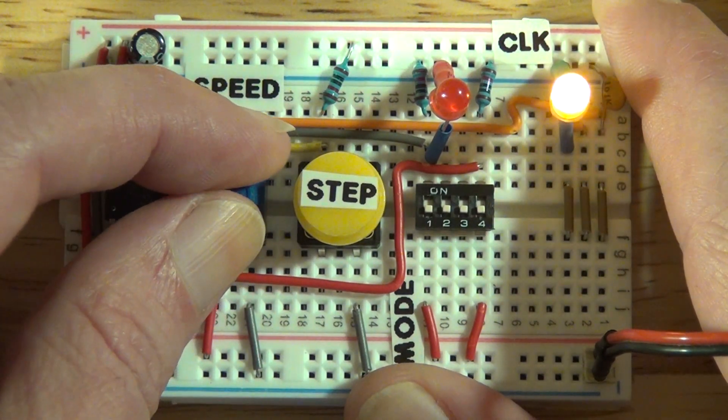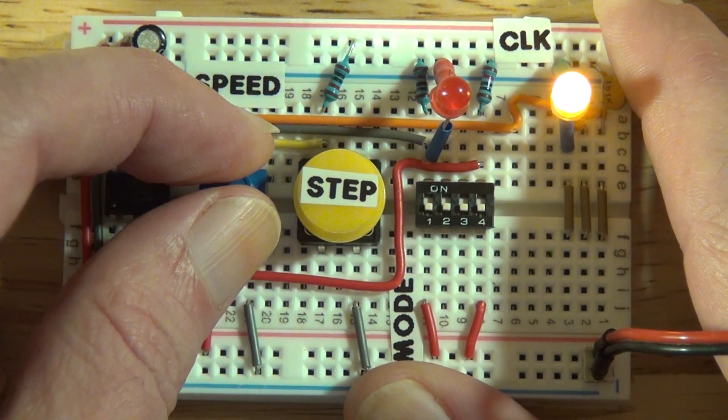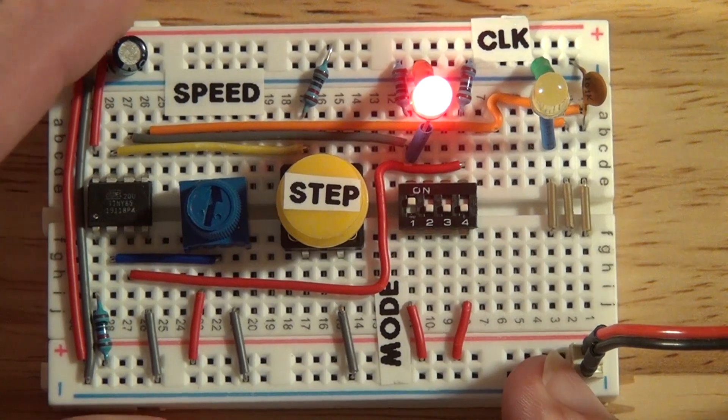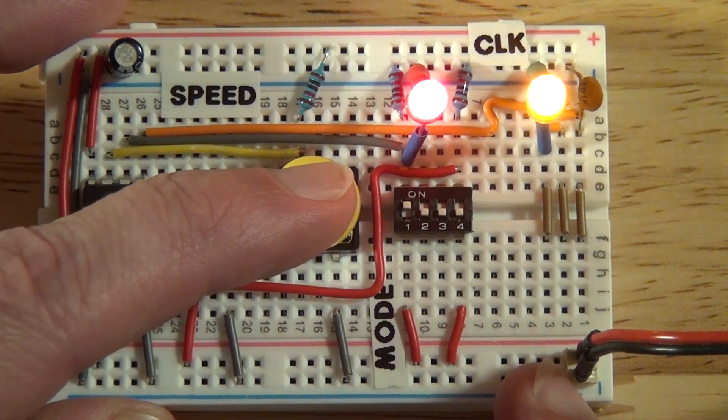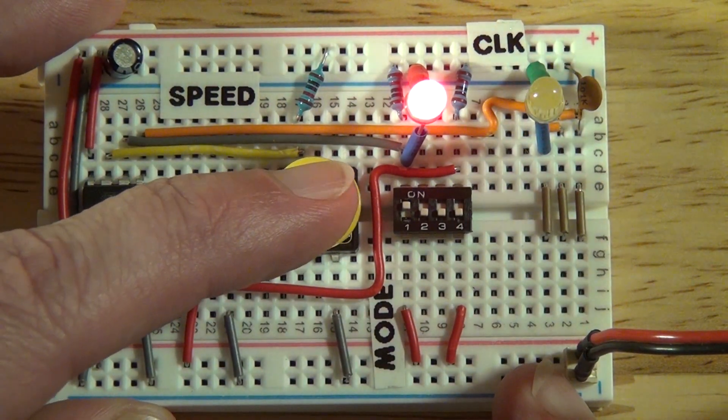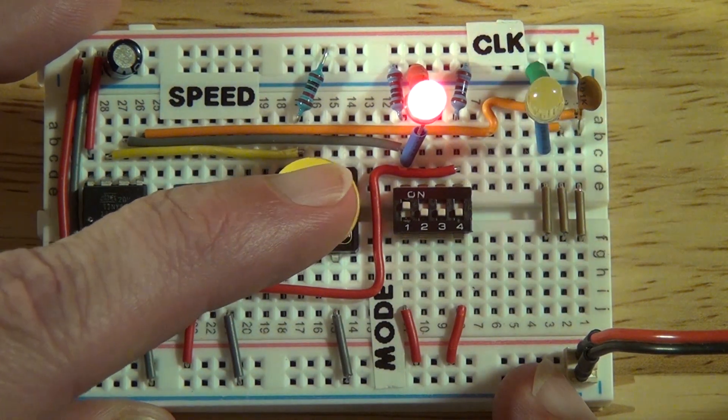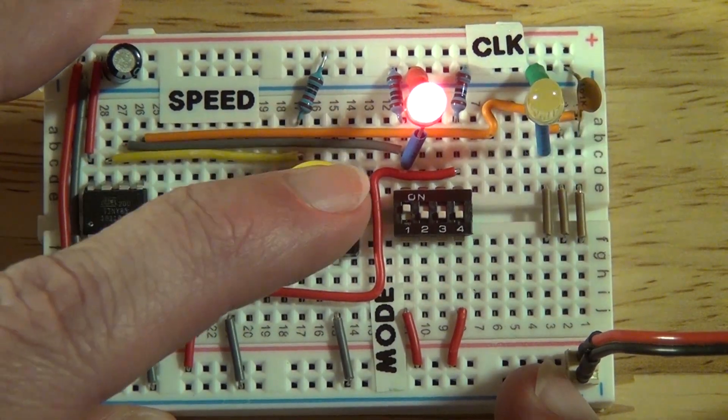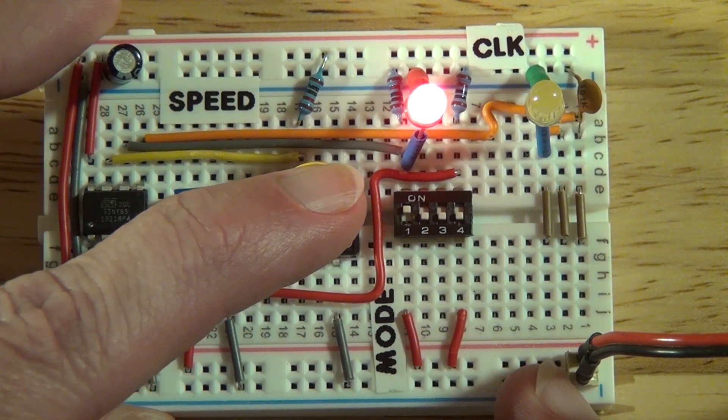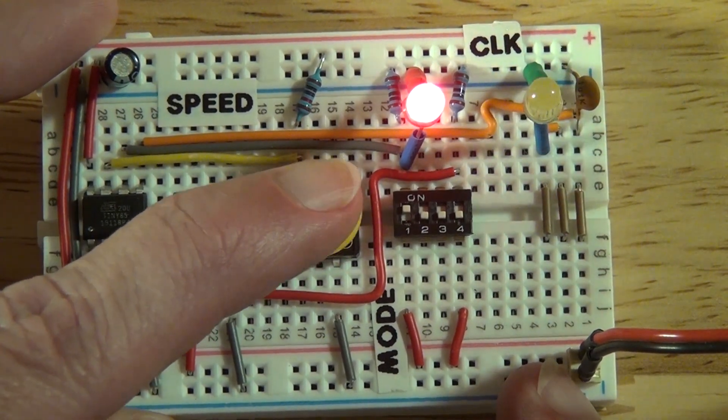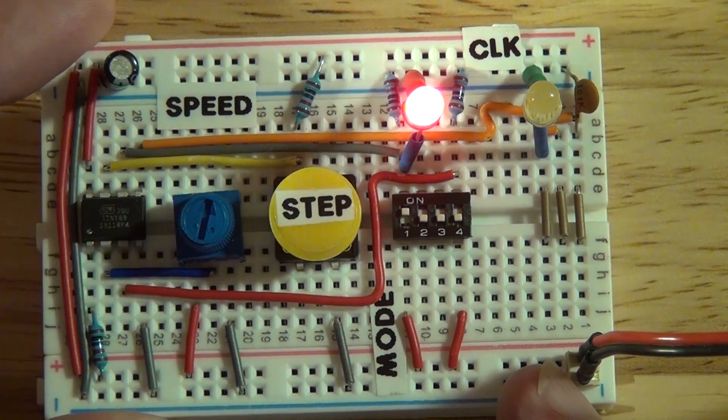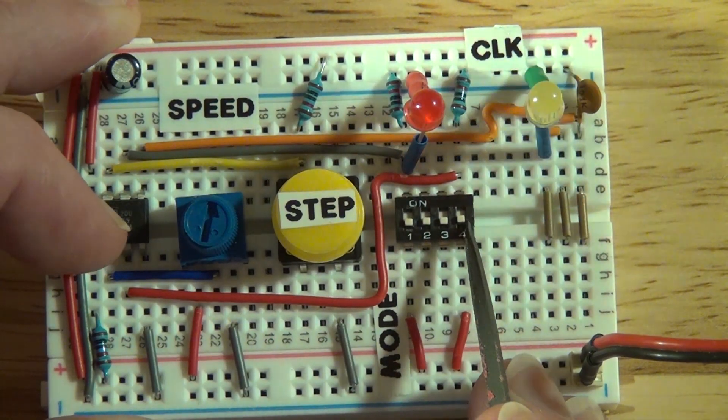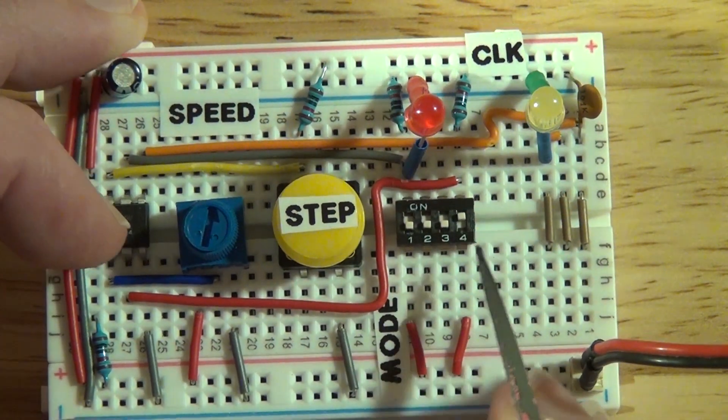And I don't know what the maximum speed is, but it looks like the LED is just on. So then if you switch over into manual mode, you can single step the clock. And that's just simply a debounce button. So if you click it too fast, you only get one clock pulse.